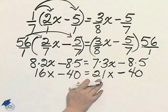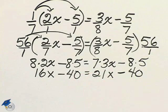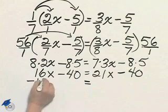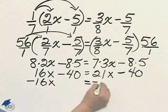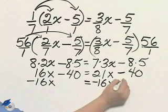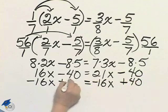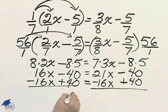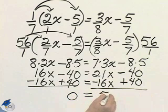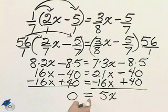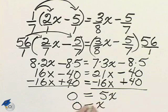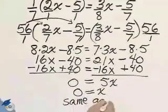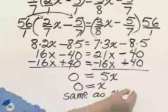I don't like to divide by negatives, so I'm going to subtract 16x from both sides and add 40 to both sides. Here I have 0, 5x. If 0 is 5 times x, then x must be 0. This is the same as x equals 0.